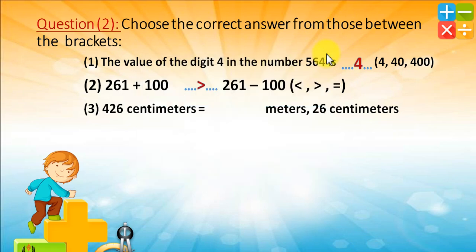426 centimeters equals 4 meters and 26 centimeters. Which digit is in the hundreds place? 4. So write 4 in meters, and the rest of the number — 26 — is in centimeters.